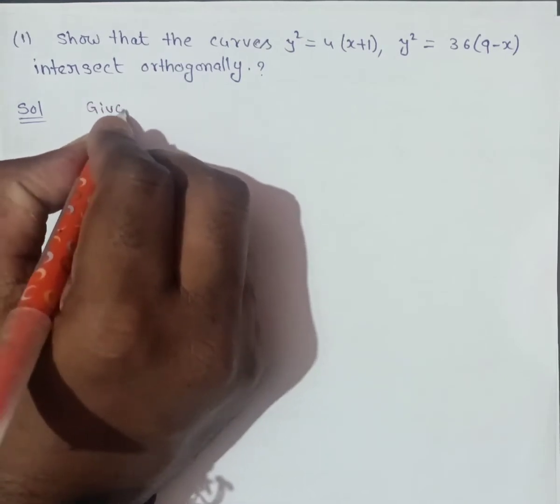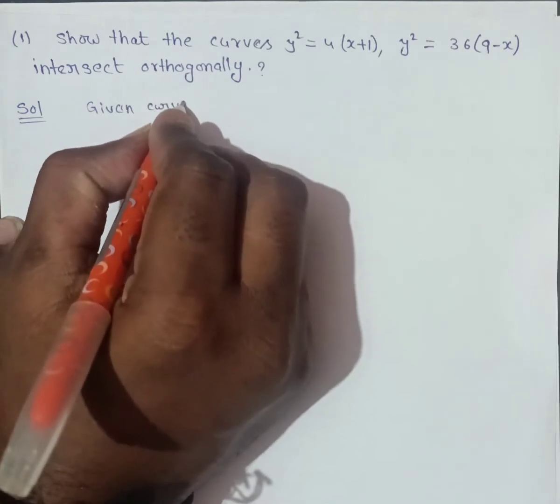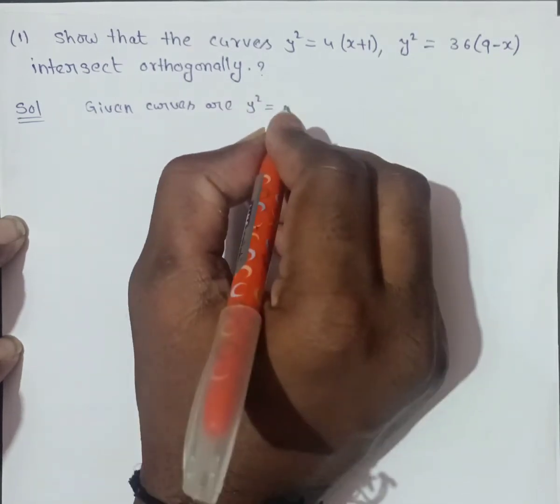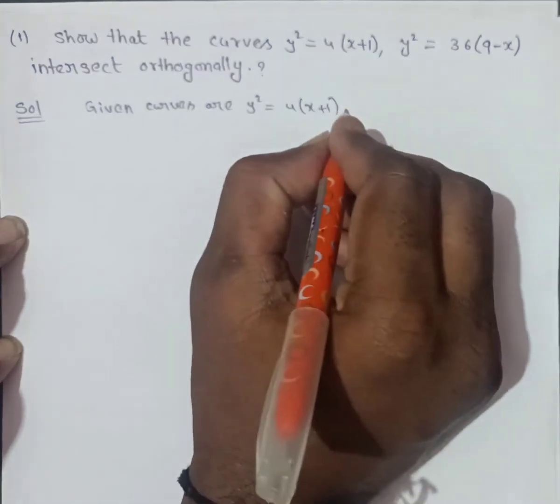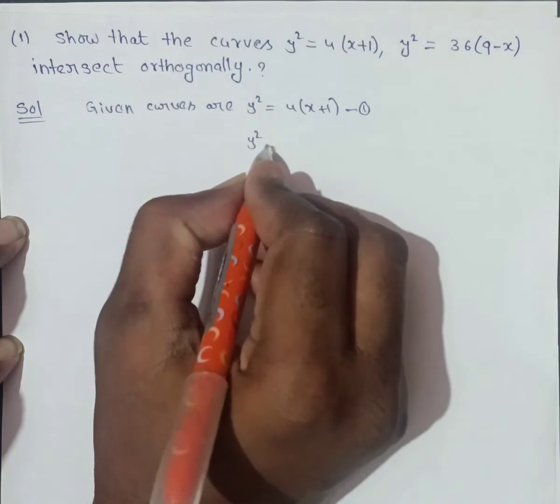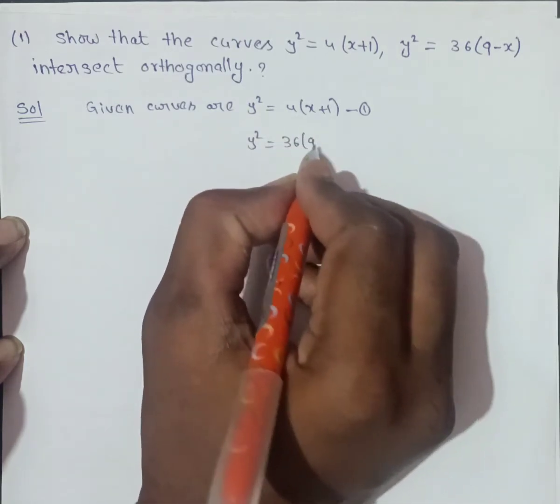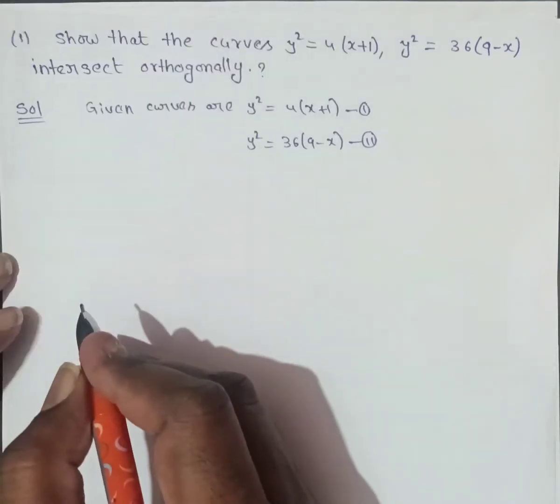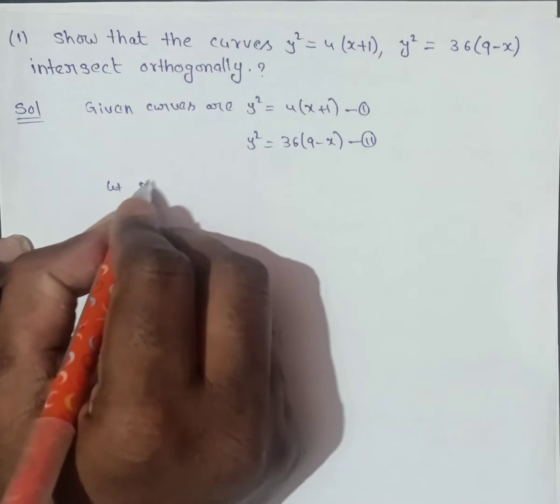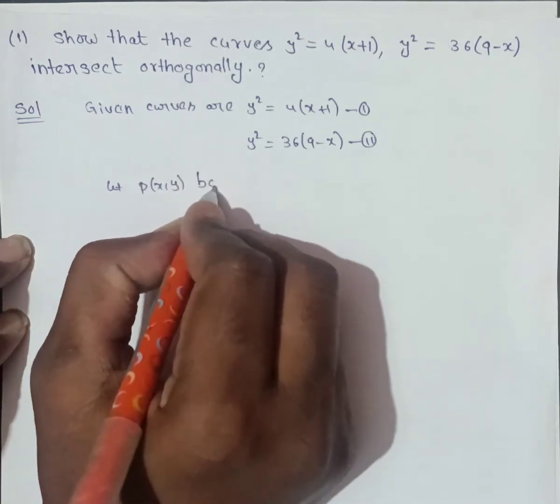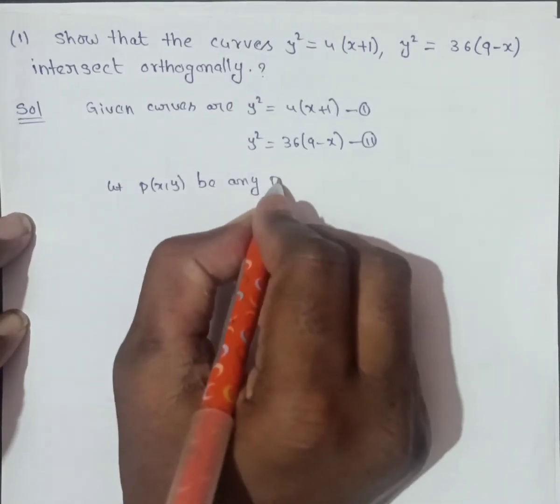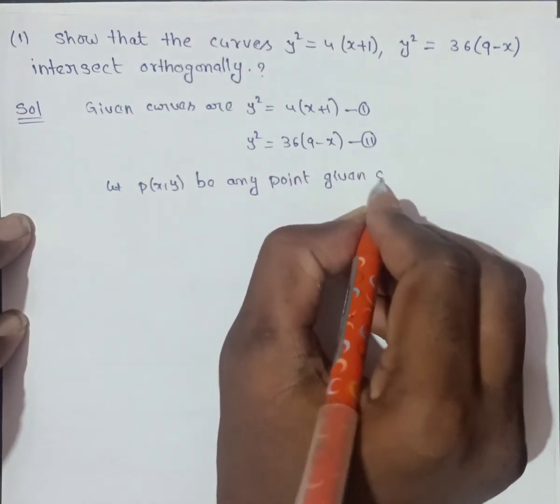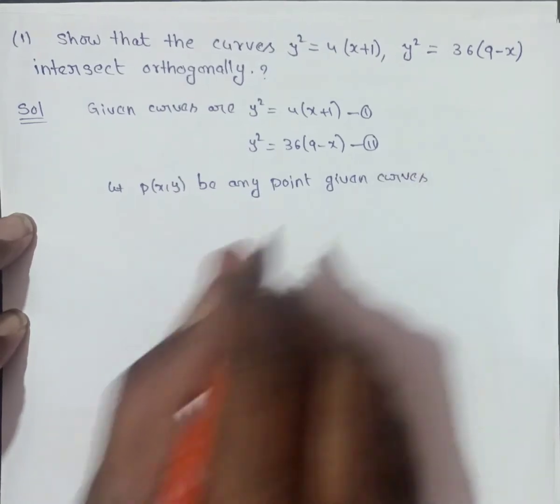Given curves are Y² is equal to 4 into X plus 1, this is equation number 1. And Y² is equal to 36 into 9 minus X, this is equation number 2. Let P of X comma Y be any point on the given curves.